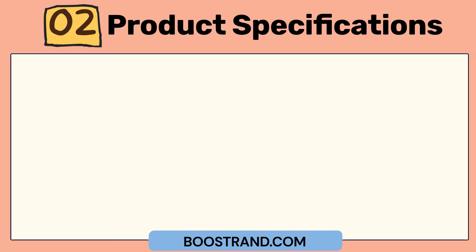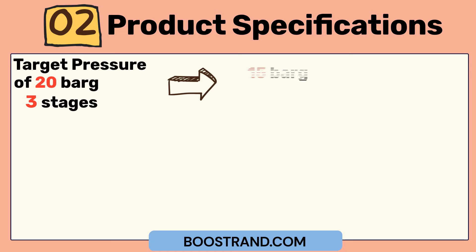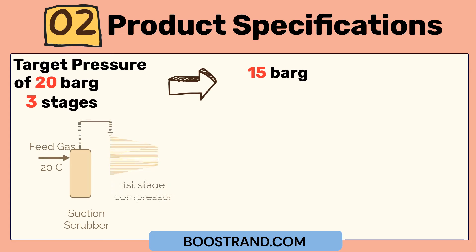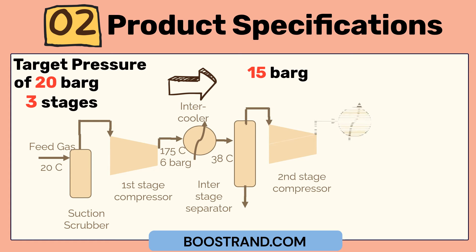Or if we want a target pressure at the battery limit of the plant to a downstream facility of 20 bar gauge, this can lead to more compression stages than a target pressure of 15 bar gauge, for example, which means more compressor coolers and receivers.